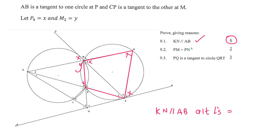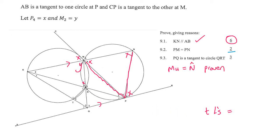Moving on to question 9.2: prove PM equals PN. PM is this one and PN is this one. They're equal because we know that M4 is already the same as angle N, proven from previous steps. So we can say PM is equal to PN because they are the sides opposite equal angles.